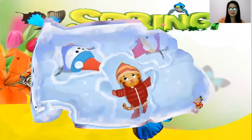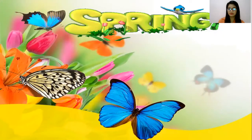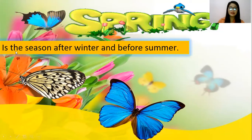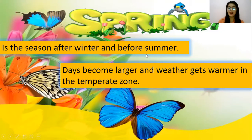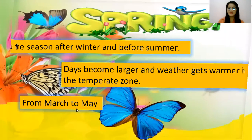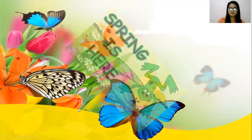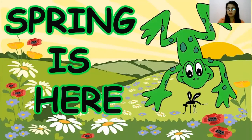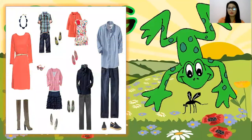Now let's proceed to the next one: spring. Spring is the season after winter and before summer. Days become longer and the weather gets warmer in the temperate zone. It starts from March to May. As you can see, the flowers will bloom and insects will come out because winter is finished. During spring, we can wear casual clothes — no more jackets or trench coats because it is a little bit warmer.